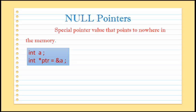Here, first we have declared one integer variable, that is int a. In the next line we have declared one pointer variable and we have initialized it with the address of variable a, that is &a. So here pointer variable ptr will hold the address of variable a, meaning pointer variable ptr is pointing somewhere in the memory location.